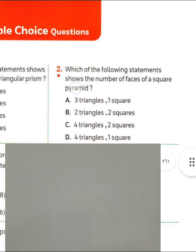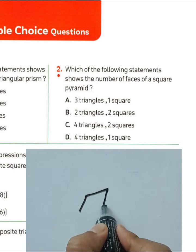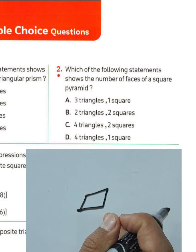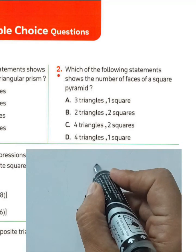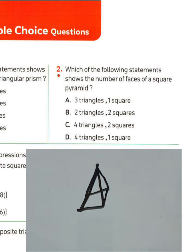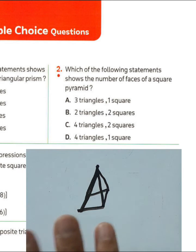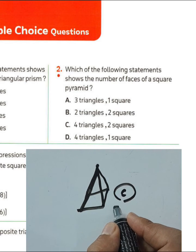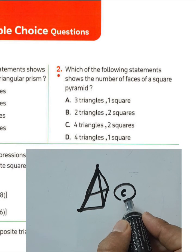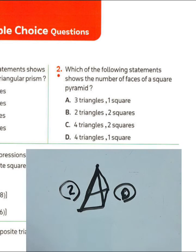Question number two: which of the following statements gives the number of faces of a square pyramid? A square pyramid has one square base and four lateral triangles — one, two, three, and four. So we have four triangles and one square. Choose letter D for question number two.